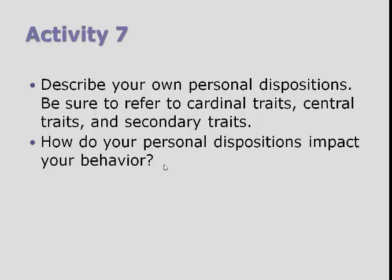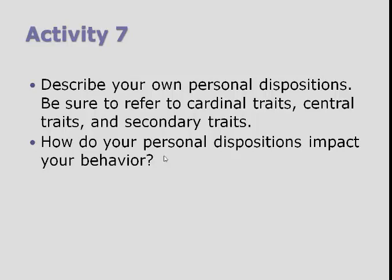The activity for this week asks you to describe your own personal dispositions using Allport's terms — what is your personality like? Tell me some cardinal traits if you have overruling passions in your life. Describe your central traits — those parts of your personality that someone might mention when describing you to another person. And list some secondary traits or preferences that still impact you a little bit. Then explain how your personal dispositions, especially cardinal and central traits, actually impact your behavior and change what you do.